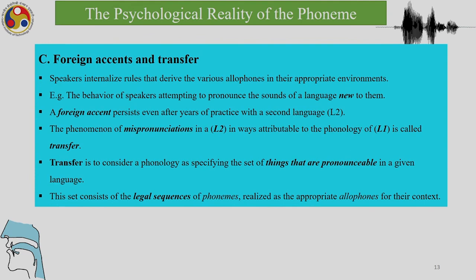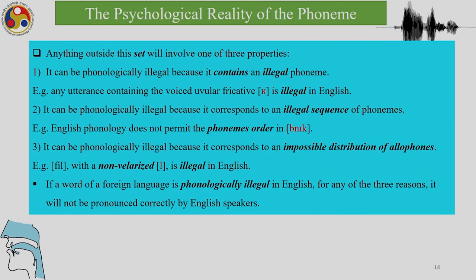Now talking about foreign accents and transfer: what happens when a speaker internalizes rules that derive various allophones in their appropriate environments? The behavior of speakers attempting to produce sounds of a language new to them persists even after years of practice. The phenomenon of mispronunciations attributable to one's native phonology is called transfer. Transfer considers a phonology as specifying the set of things that are pronounceable in a given context — the legal sequences of phonemes realized as appropriate allophones. If a word of a foreign language is phonologically illegal in English, it will not be pronounced correctly by English speakers.